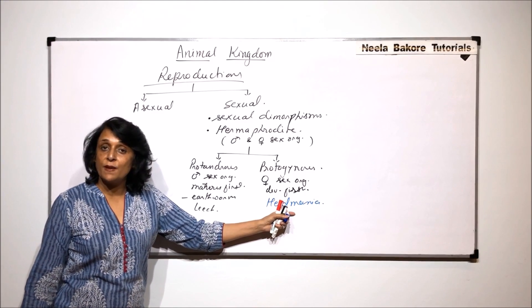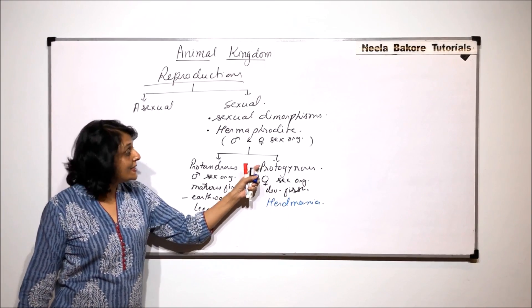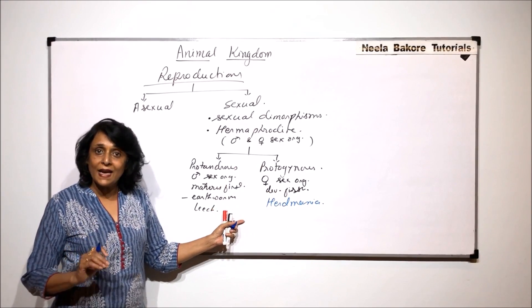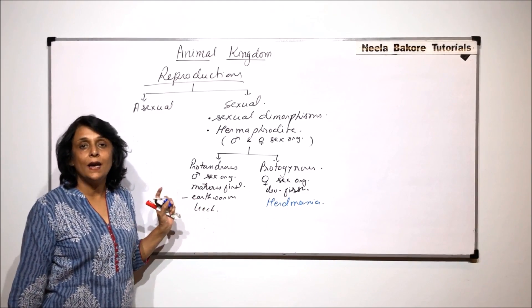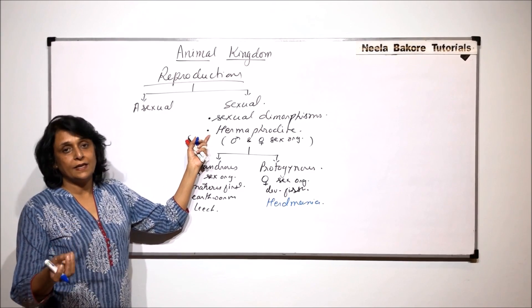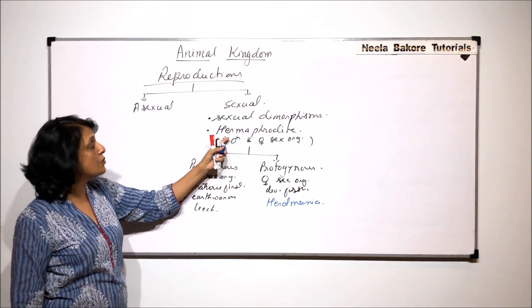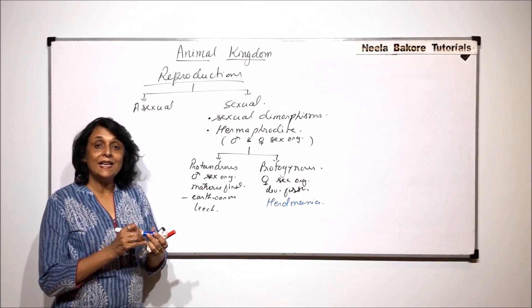So if this is protogynous, female sex organ will be maturing first. So egg formation will take place first. And because egg is formed, the male gamete in the same animal is not formed yet. Chances of self fertilization can be completely avoided. So if sexual dimorphism is there, that is very good. Sex organs are present in different organisms or individuals. And hermaphrodite means one animal has it. But these are the two adaptations which favor cross fertilization.